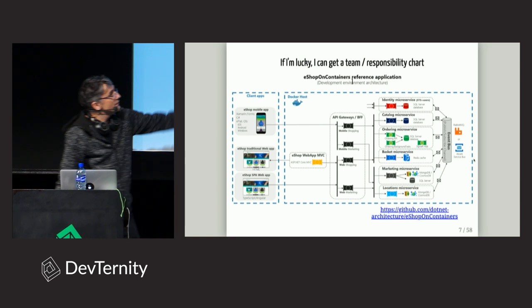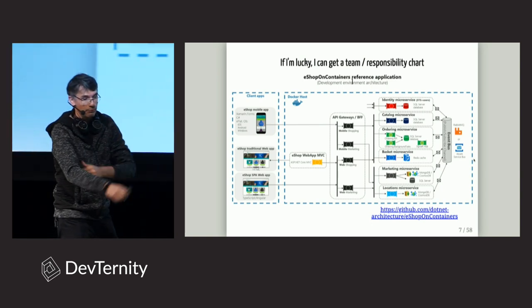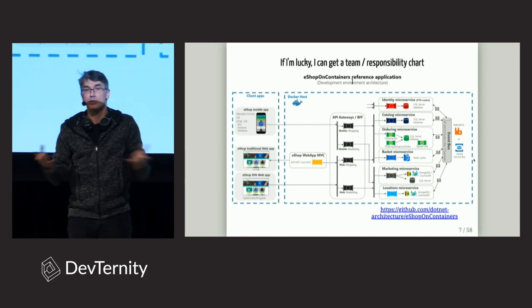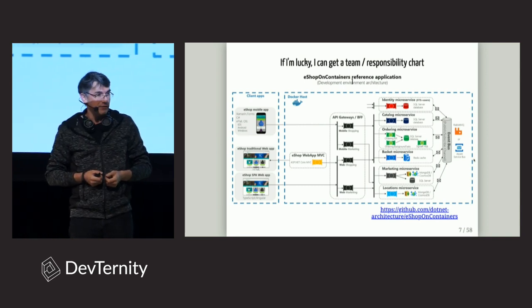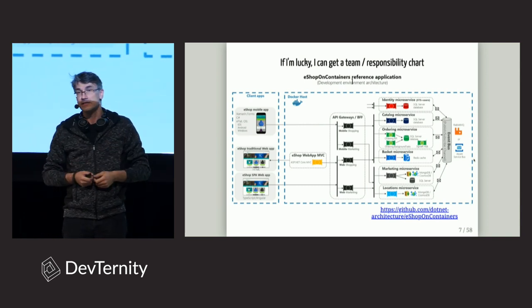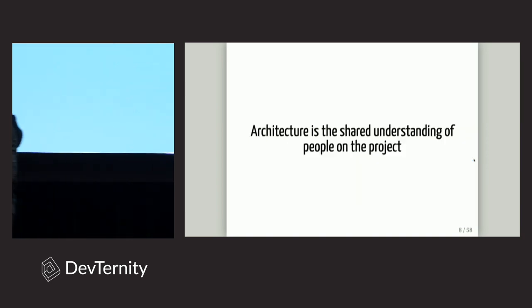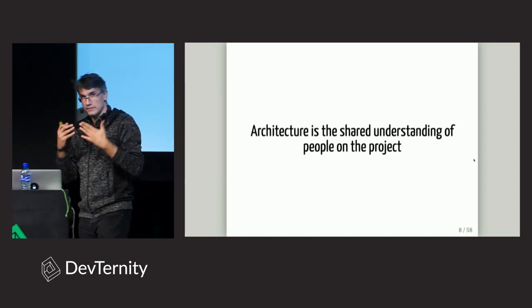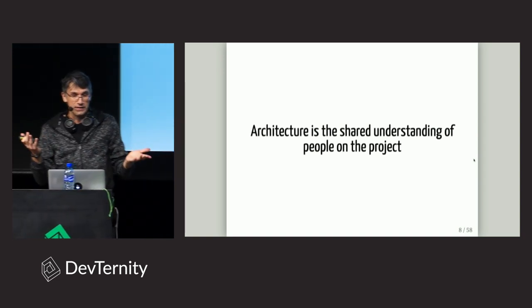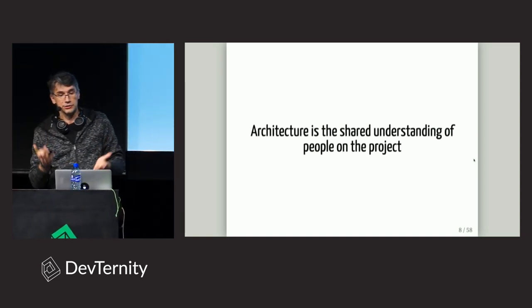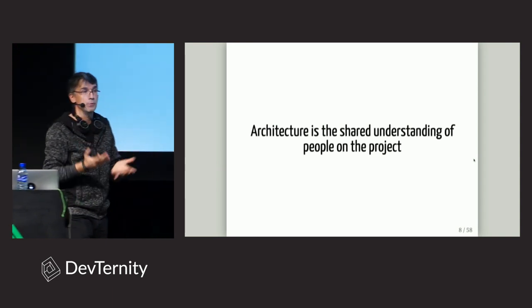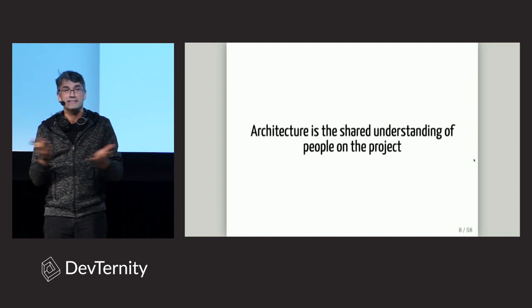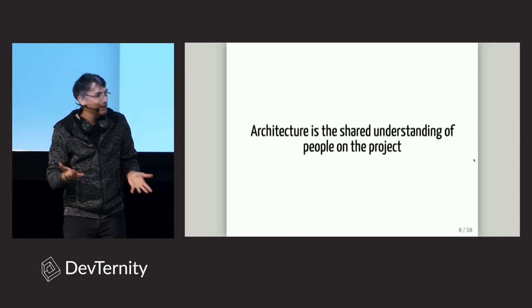When you go to different teams and ask people what they think about the architecture and where new logic should go, they give you conflicting answers — which is a shame. Because the best definition of architecture I've heard is that architecture is the shared understanding of the people on the project. When you have no shared understanding, do you even have architecture?